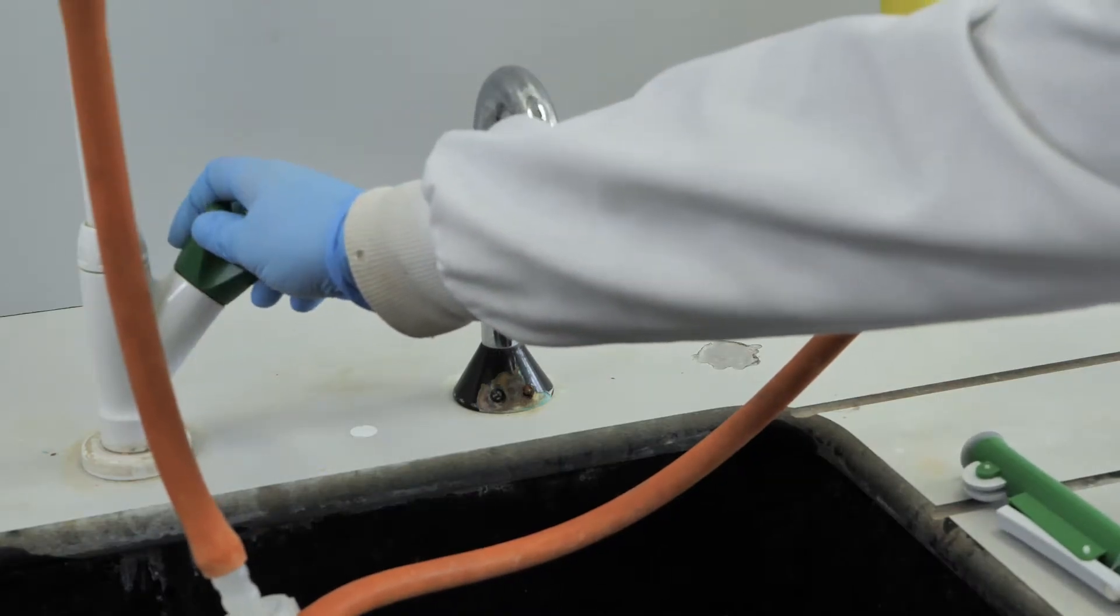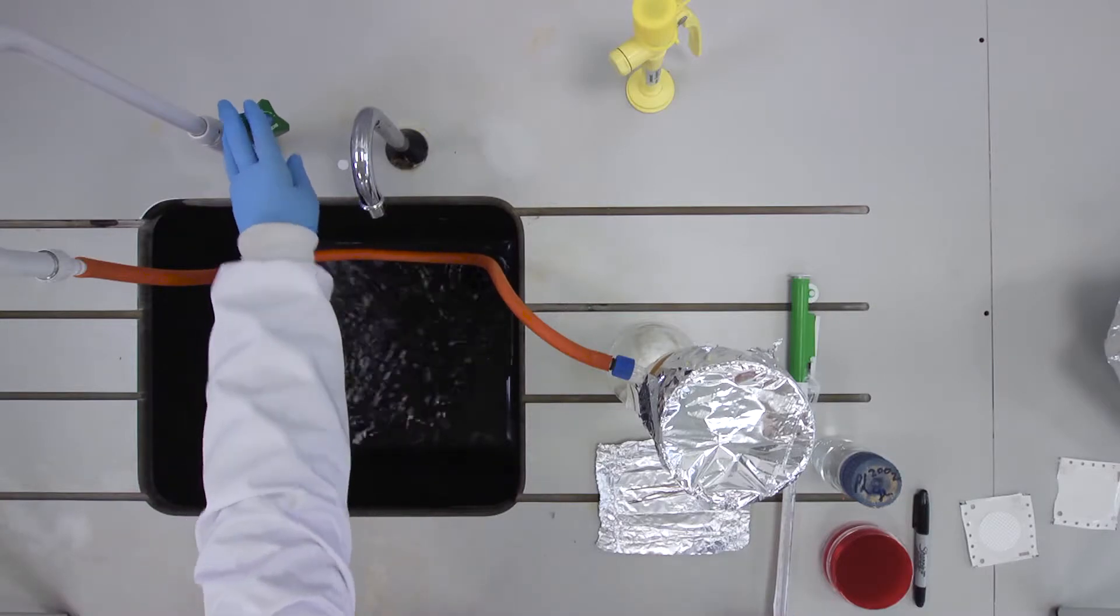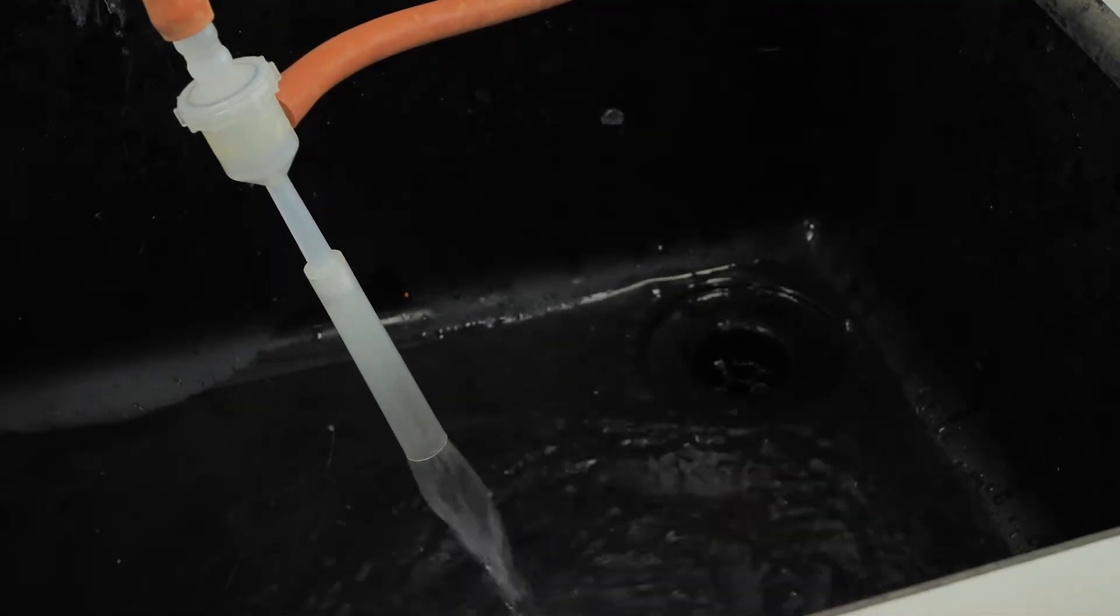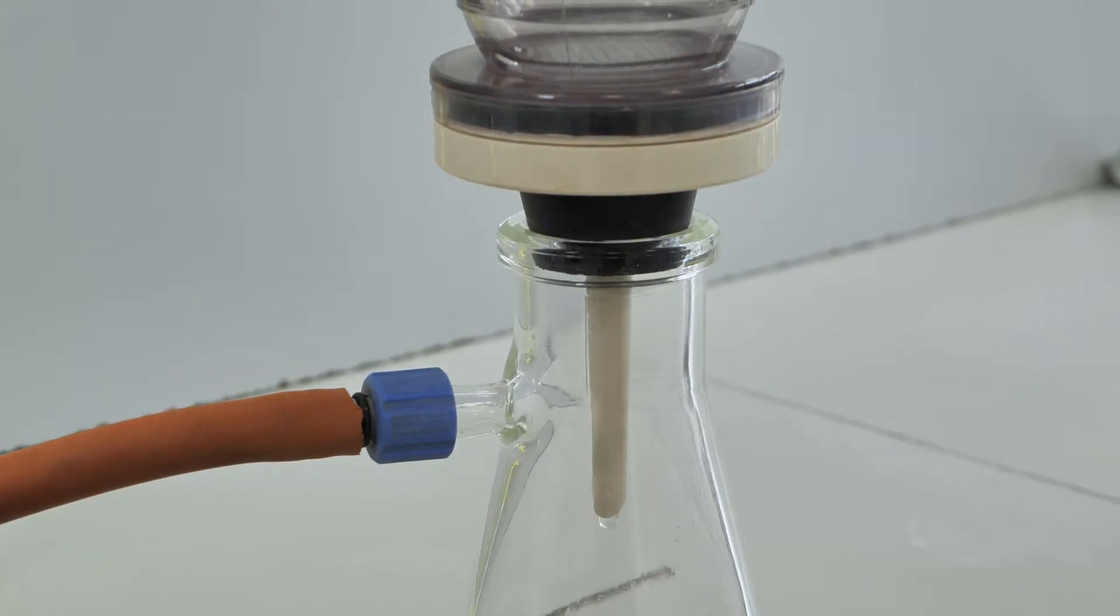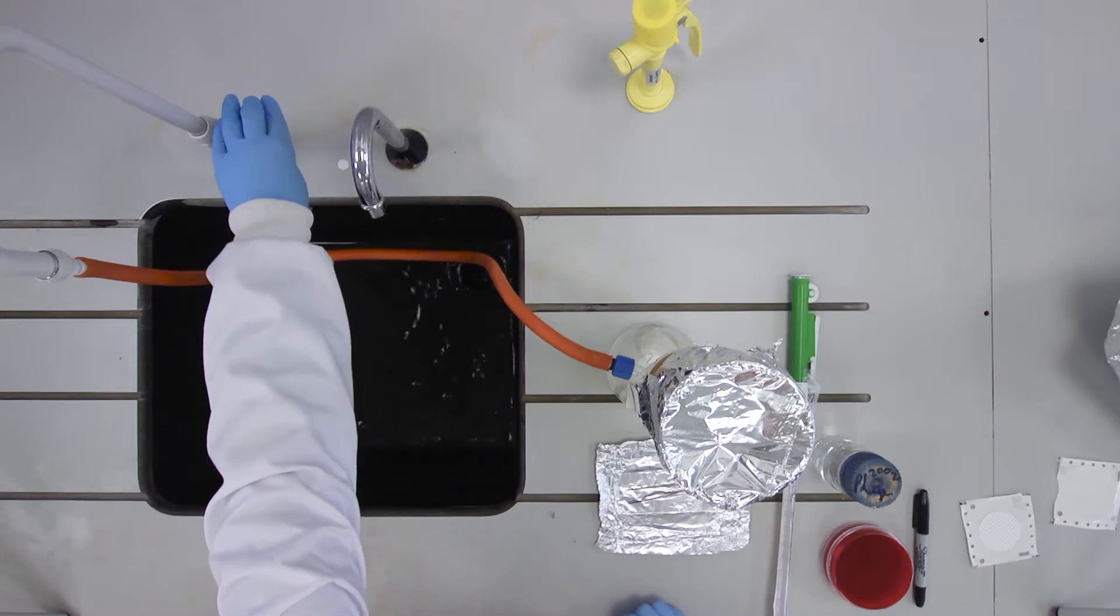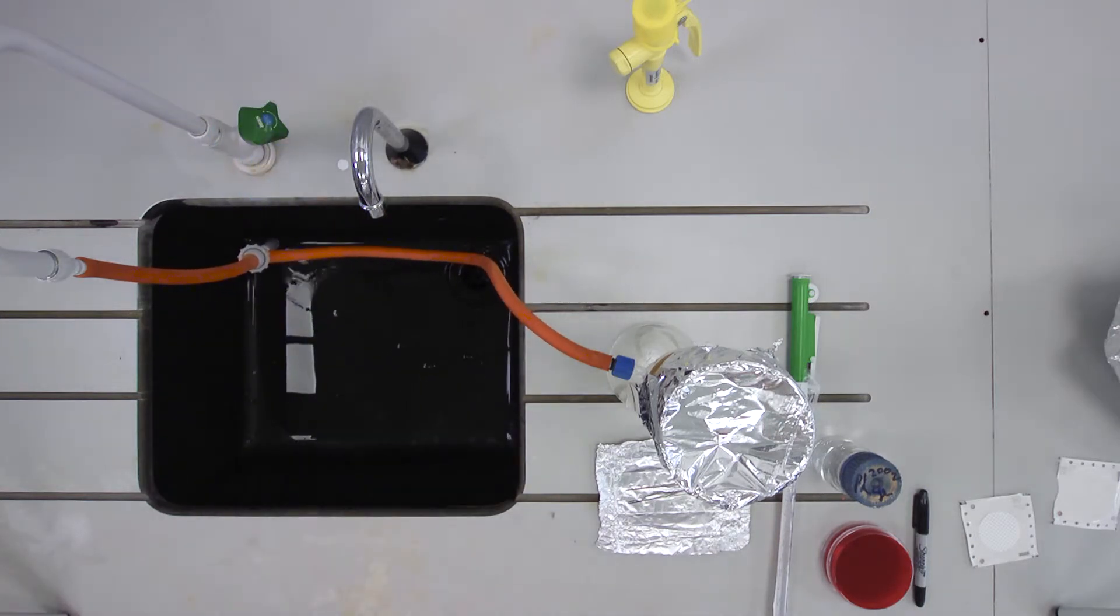Turn on the tap attached to the Venturi pump. You should see the liquid passing through the membrane and into the flask below. Once all of the liquid has passed through the filter, turn off the tap.